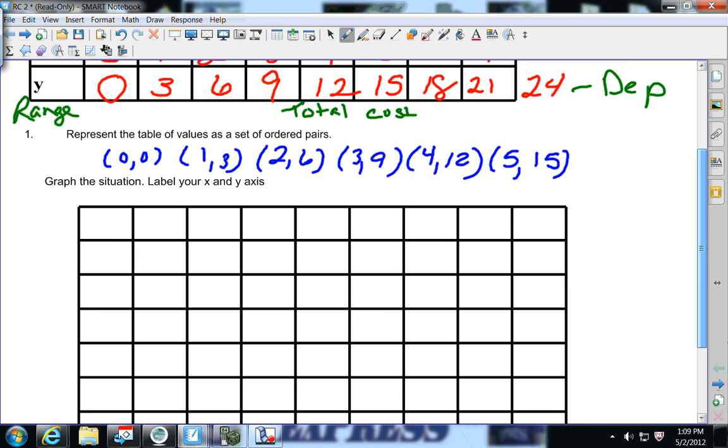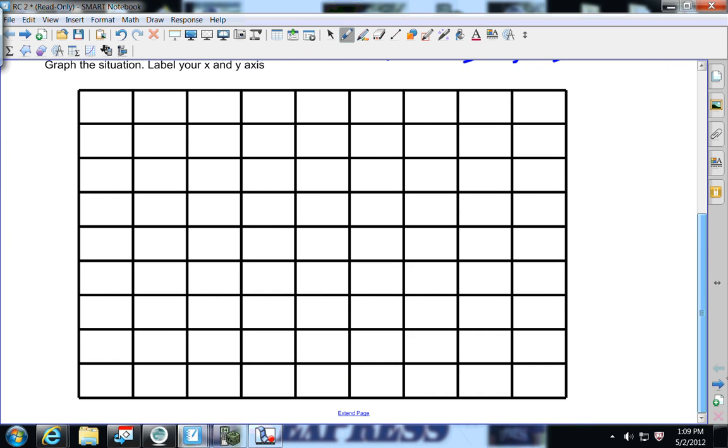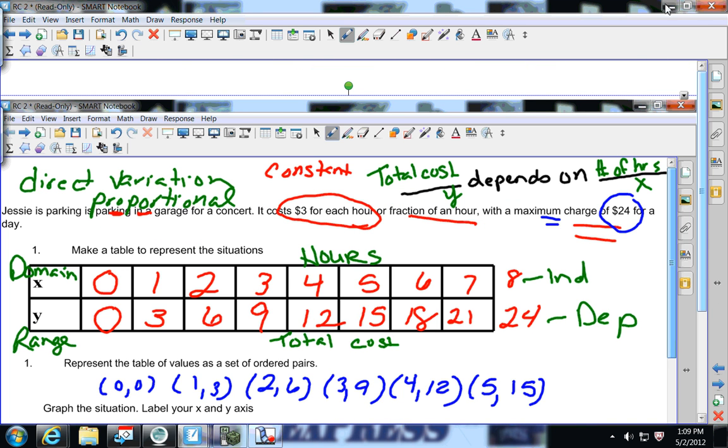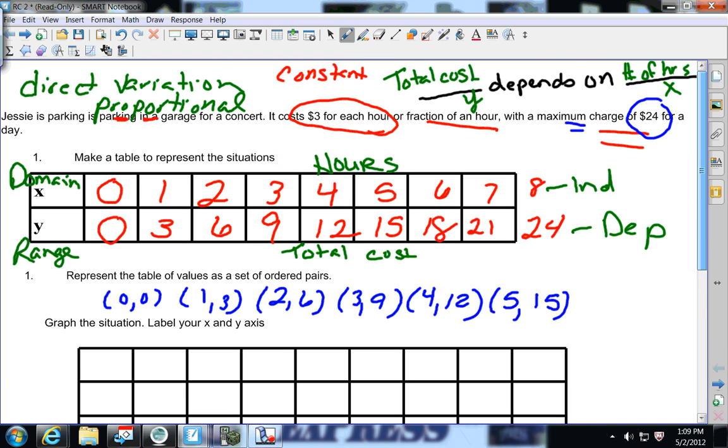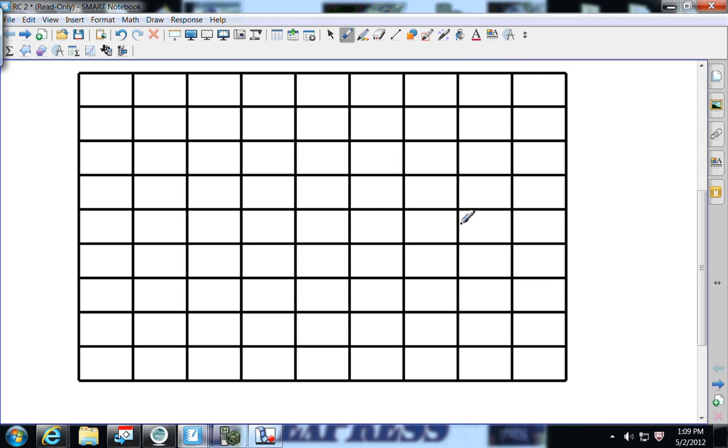Now it wants us to graph it. First off, we just said that the X is going to be the time. And the Y is going to be the total cost. My time is going to start: one hour, two, three, four, five, six, seven, eight. I'm going to stop at eight because the cost doesn't go any higher than that.